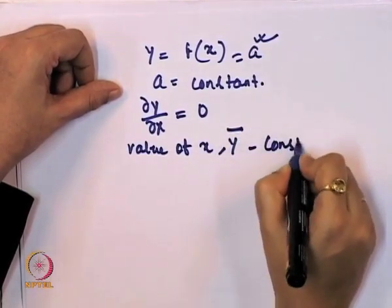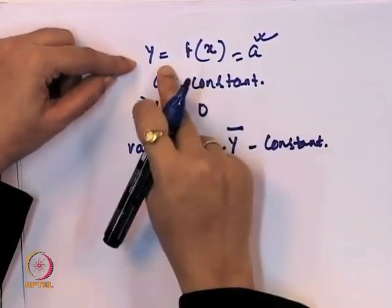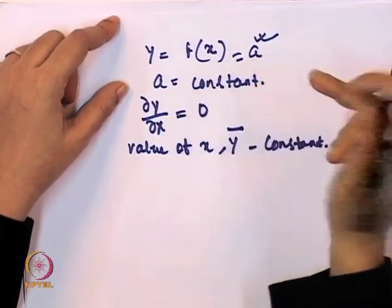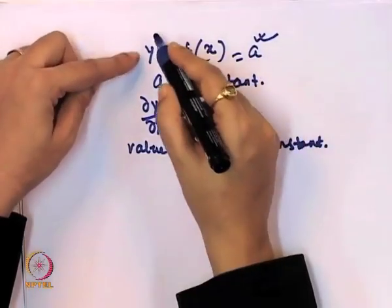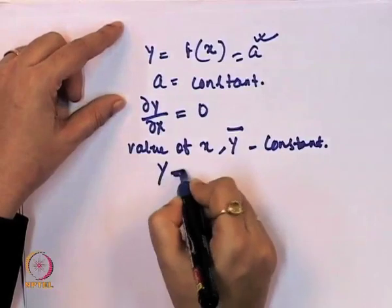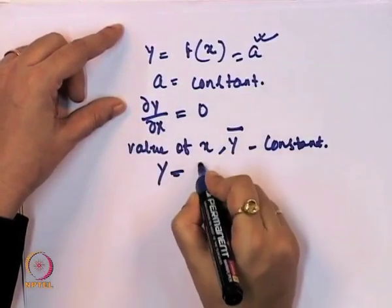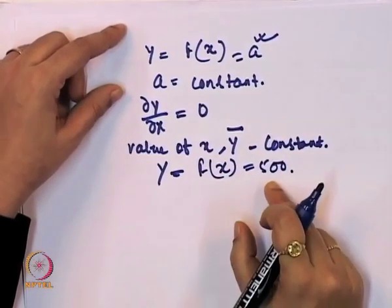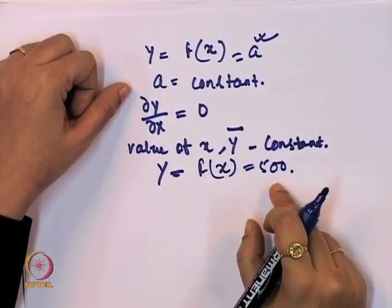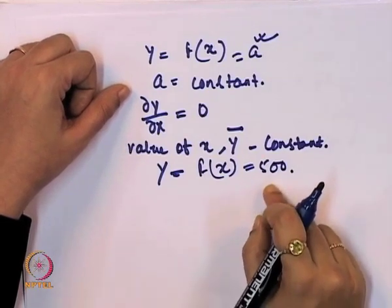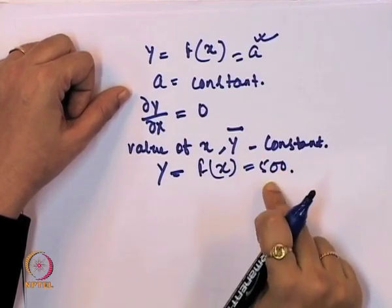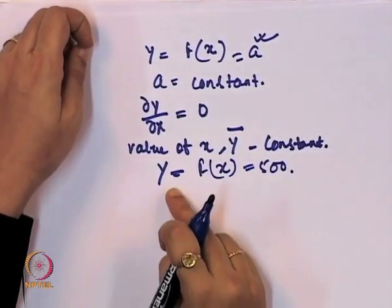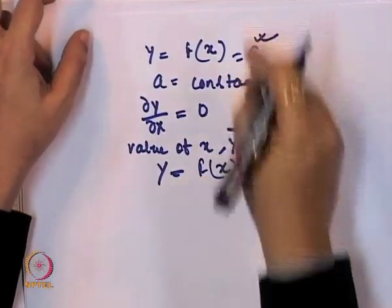So whatever the value of x, y remains constant — there is no change in y because y is represented as a constant function. For example, if y = f(x) = 500, this is the value of the intercept, not the slope. Whatever the value of x, y remains constant. This is the derivative of a constant function.